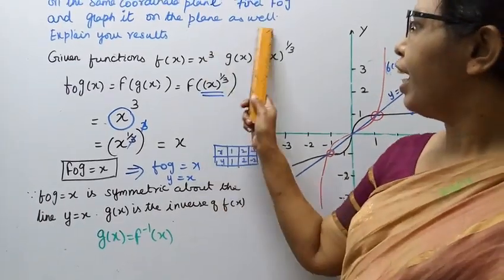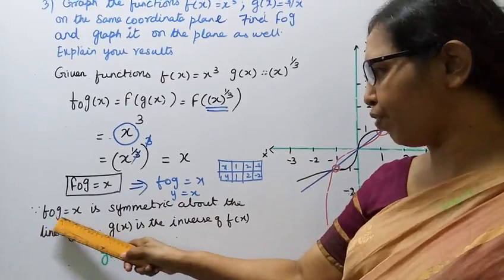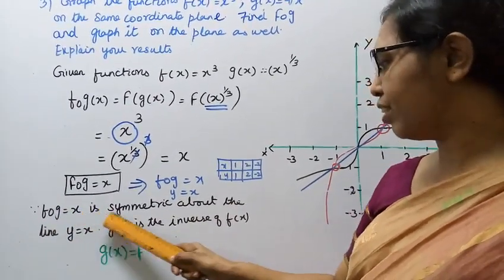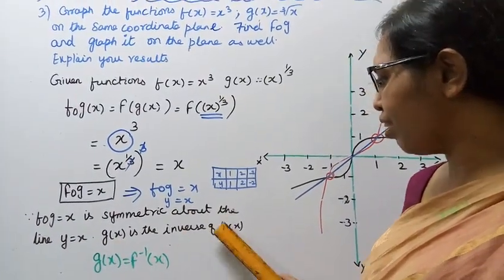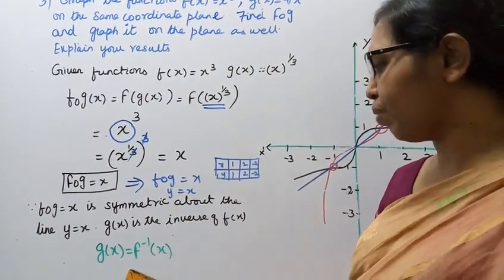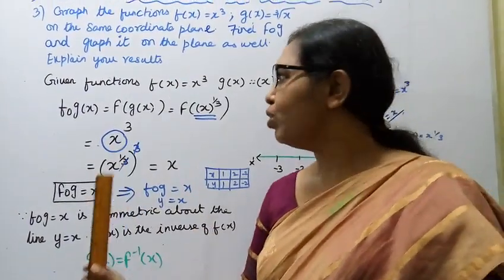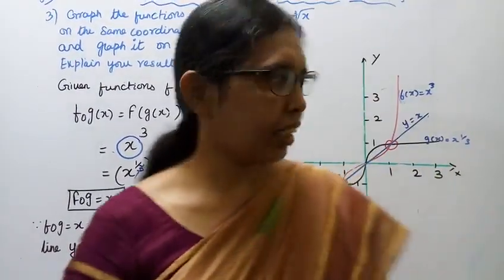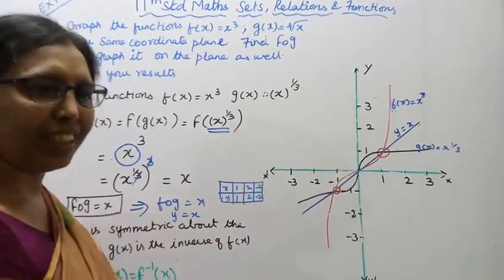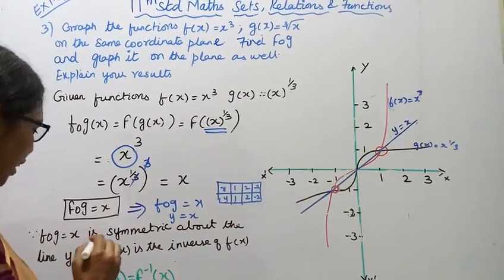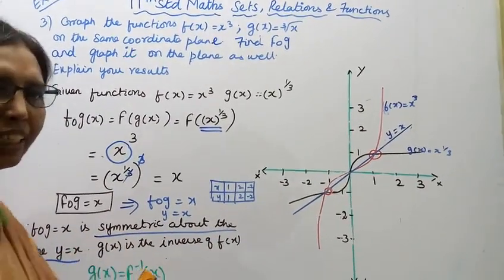f∘g = x is symmetric about the line y = x. g(x) is the inverse of f(x). f inverse of x. It is symmetric about the line y = x.